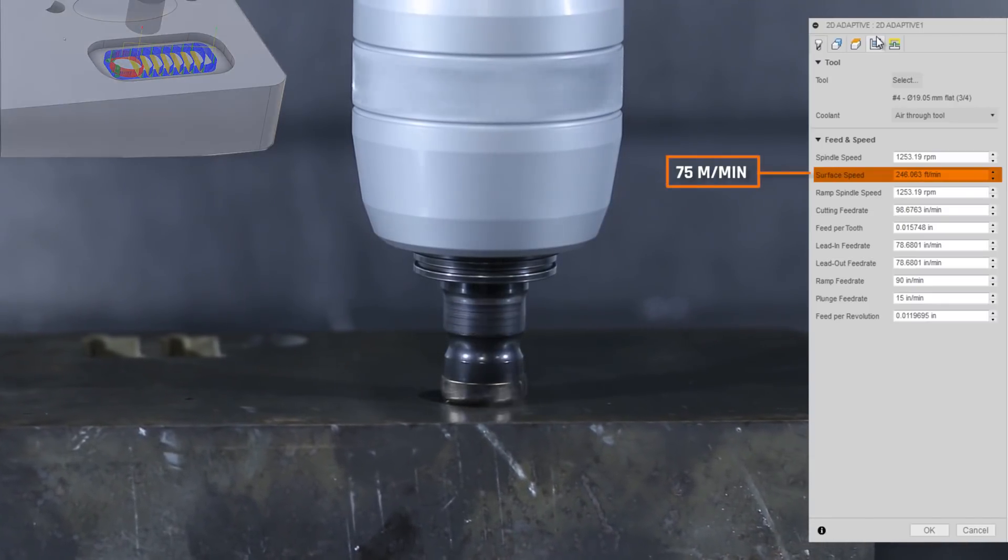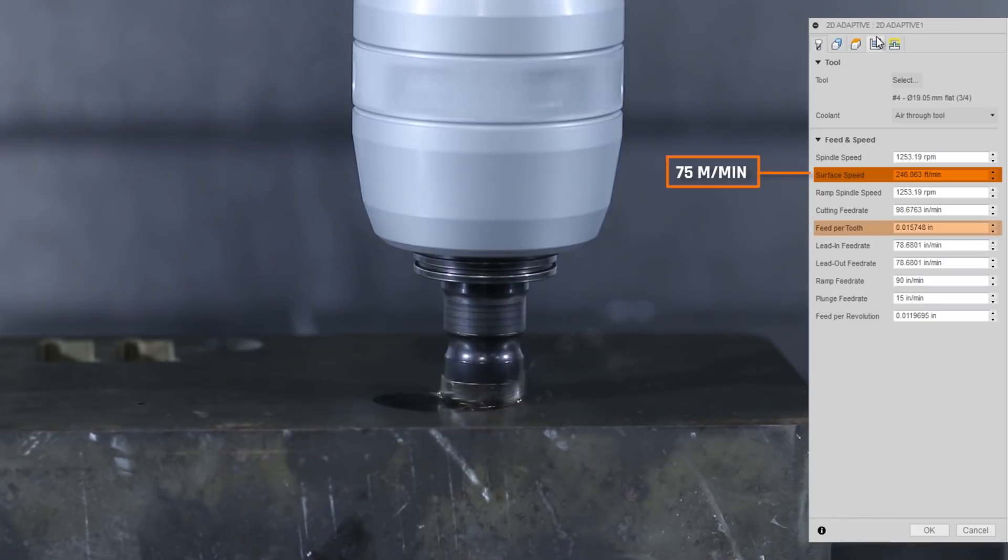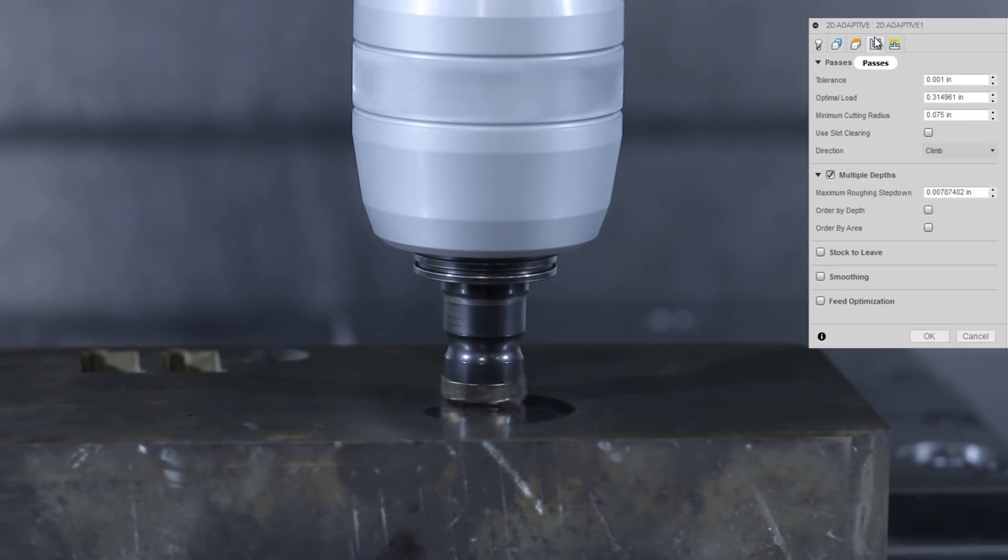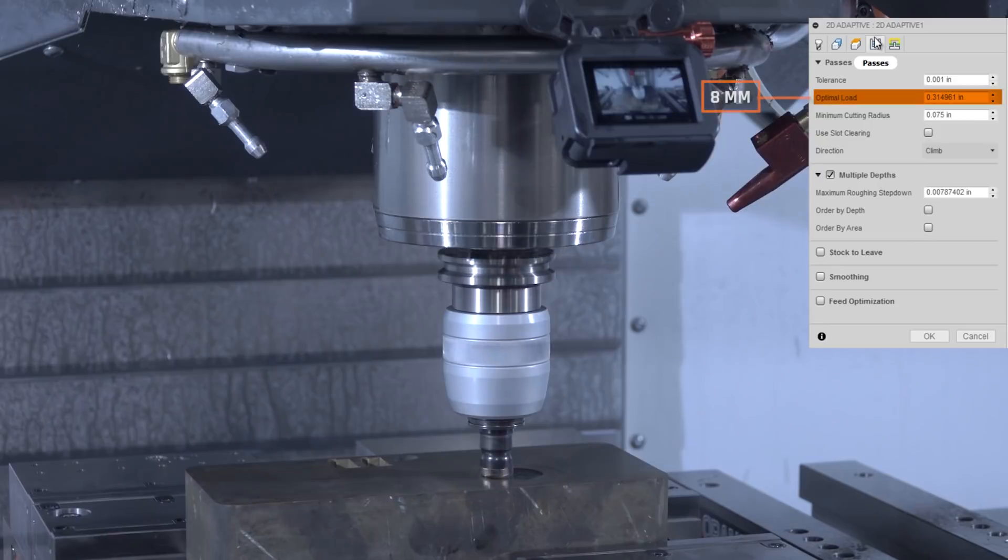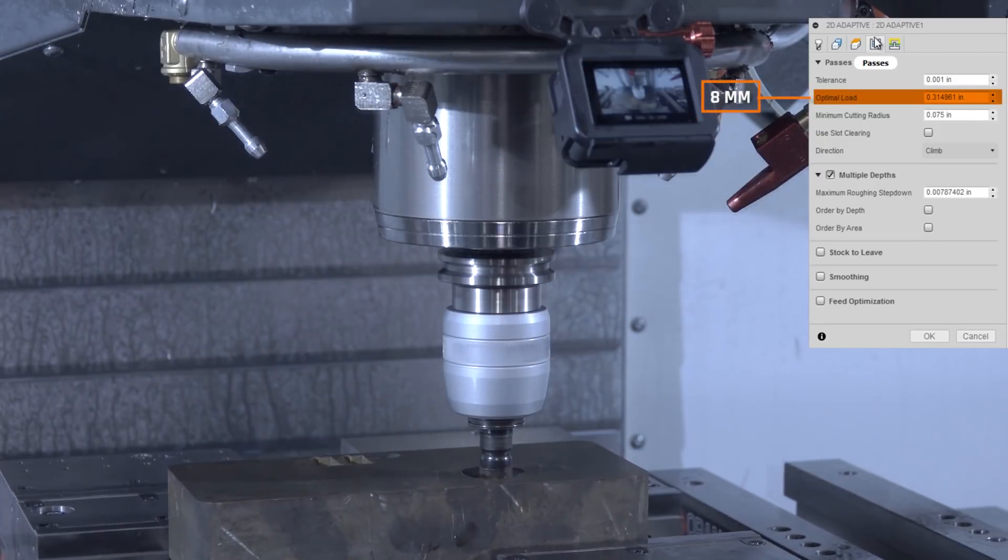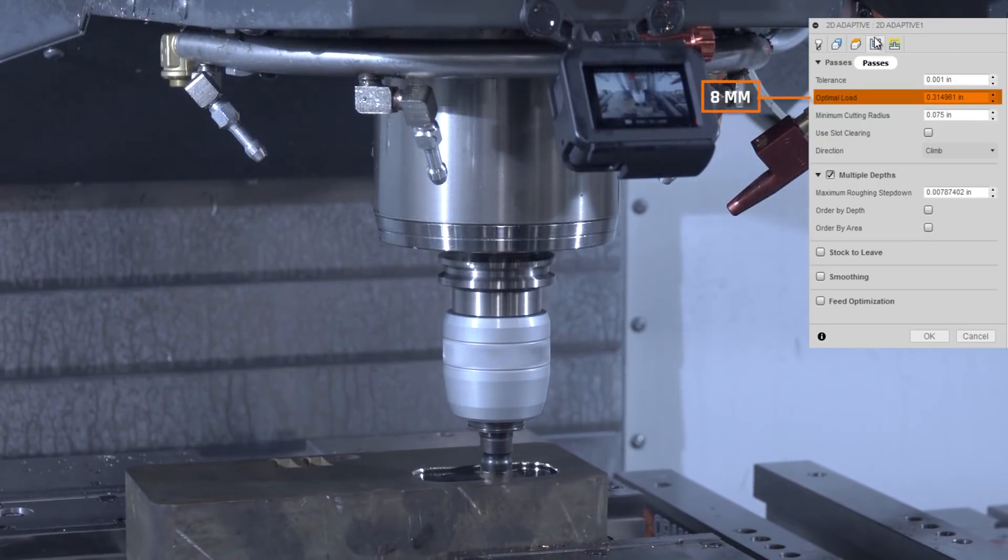246 surface feet per minute, almost 16,000 feet per tooth. Again, taking an 8 millimeter optimal load or width of cut and just under 8 thousandths of an inch depth of cut.